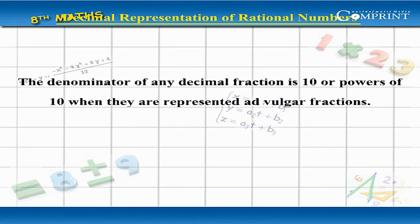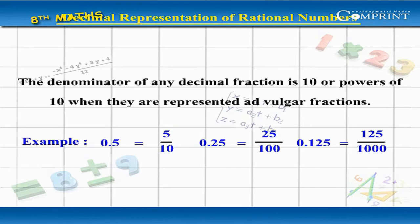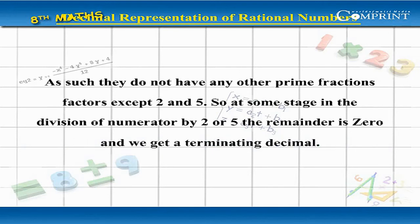The denominator of any decimal fraction is 10 or powers of 10 when they are represented as vulgar fractions. For example: 0.5 = 5/10, 0.25 = 25/100, 0.125 = 125/1000. As such, they do not have any other prime factors except 2 and 5.